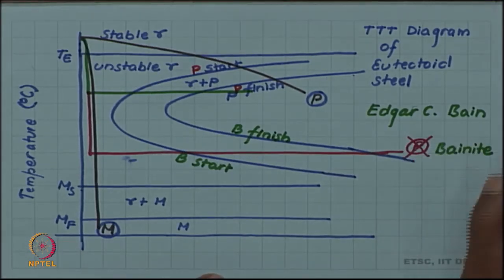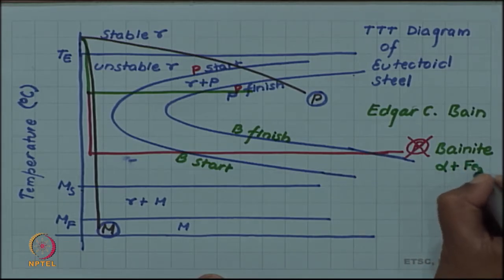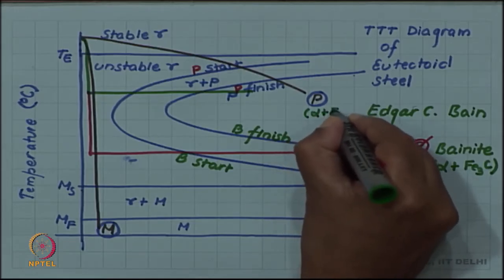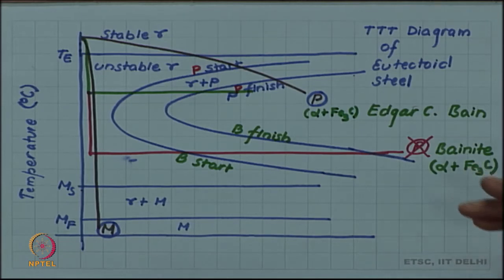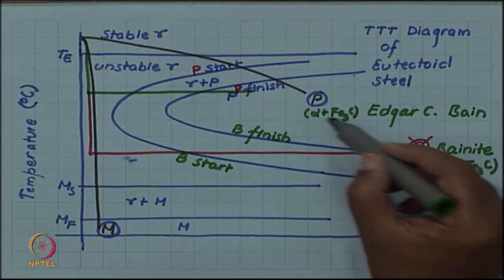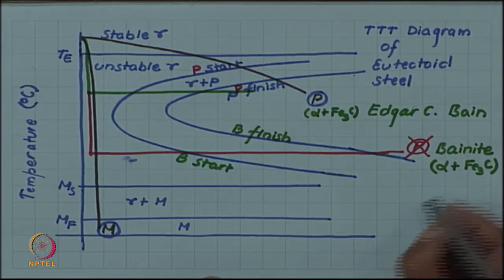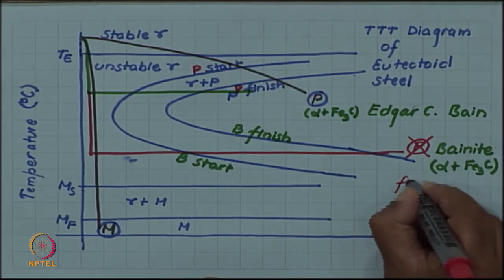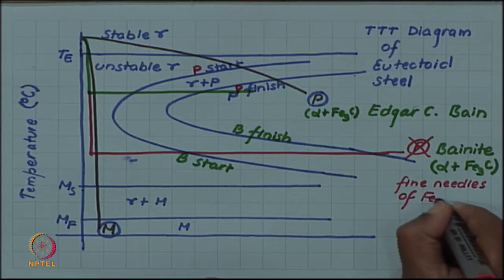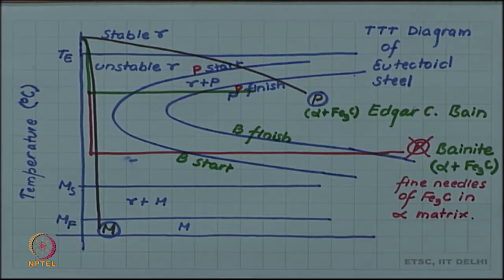Why did bainite not resemble pearlite? Bainite was also consisting of alpha plus Fe3C. So in terms of phases, both pearlite and bainite are mixtures of the same two phases, but in terms of appearance under the microscope — in terms of the shape of the phases — they are very different. In pearlite, alpha and Fe3C form like alternating plates, whereas in bainite that is not the case. In bainite we have very fine needles of Fe3C.